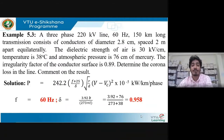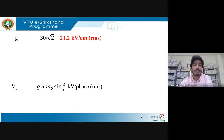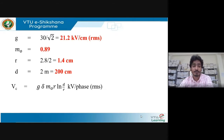The expression to find is corona power loss. Substituting values: dielectric strength g = 30 ÷ √2 = 21.2 kV/cm RMS, irregularity factor m₀ = 0.89, radius r = 1.4 cm (from diameter 2.8 cm), and spacing d = 2 meters = 200 cm. To find corona power loss, first find the critical disruptive voltage V_c.